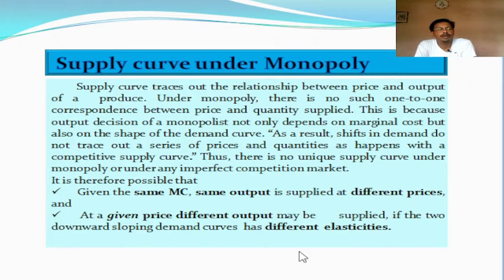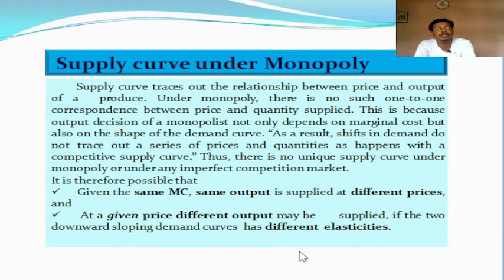That is the reason under monopoly market there is absence of supply curve — or we may say, no unique supply curve under monopoly market, or construction of supply curve is impossible under monopoly market. Not only in monopoly, it is impossible in all other imperfect competition markets also, except perfect competition market. Because in perfect competition market, the competitive firm has no influence over the price; he has to sell its commodities at a given or fixed price. That is the reason, one-to-one correspondence between price and quantity can be traced out, and accordingly, construction of supply curve becomes possible under perfect competition.